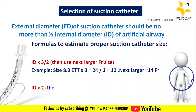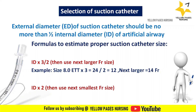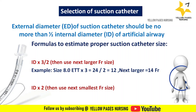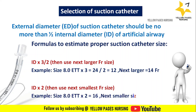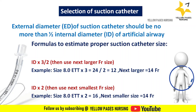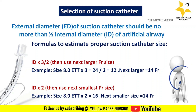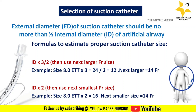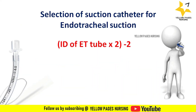Formula 2: internal diameter multiplied by 2, then use the next smallest French size. For example, with an internal diameter of 8 mm: 8 × 2 = 16, so we use the next smallest French size — that is, a 14 French suction catheter.